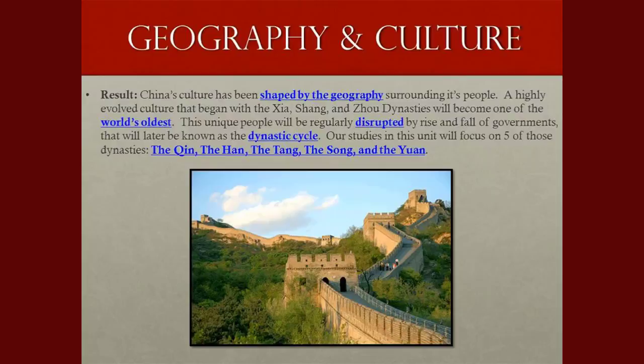As a result, China's culture had been shaped by the geography surrounding its people. The highly evolved culture that began with the Xia, the Shang, and the Zhou dynasties became one of the world's oldest. This unique people would be regularly disrupted by the rise and fall of governments, later known as the dynastic cycle. Our studies in this unit will focus on five of those dynasties: the Qin, the Han, the Tang, the Song, and the Yang. Feel free to go back and look at this video again if you have questions, and contact Mr. Vincent for any clarifying points. All notes and information for this unit are on the SLC website. Have a great day.